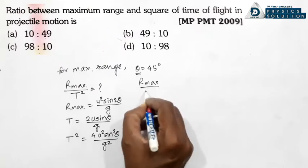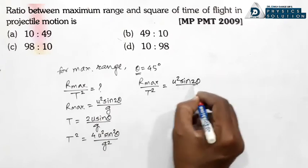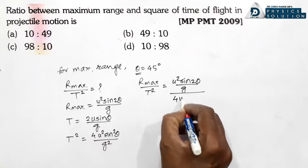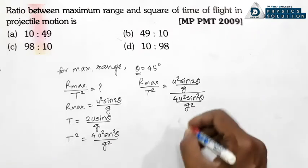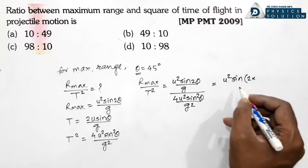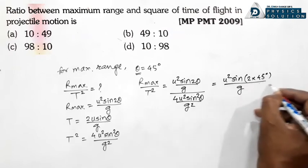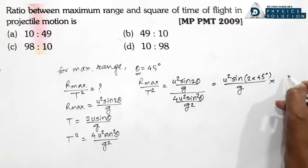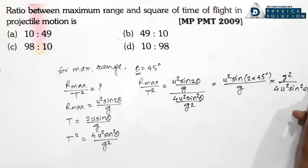R_max divided by t² — r_max ke liye equation: u² sin2θ divided by g, whole divided by t² which is 4u² sin²θ divided by g². Now substituting theta = 45°: sin(2×45°) = sin90° = 1, and sin²45° = 1/2.